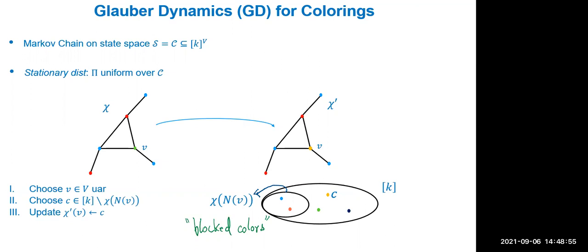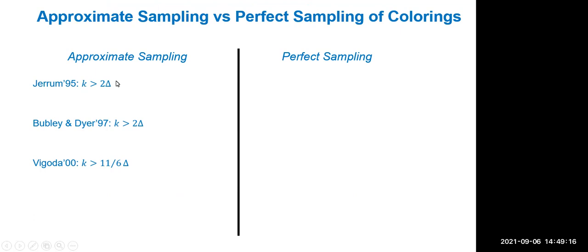The updates are done with the same randomness, but the marginal on each chain is an honest global dynamics — this is a coupling. Jerrum showed that using such a coupling, if k is greater than 2·Delta, the states of the two chains eventually coalesce in polynomial time. Once coalesced, since they run with the same randomness, they do not diverge. This argument, combined with the coupling duality that total variation is upper bounded by the mass a coupling places on non-diagonal elements, shows the distributions converge.